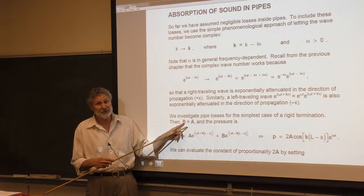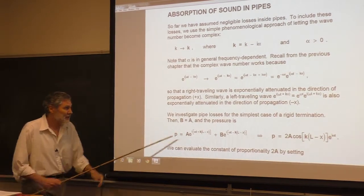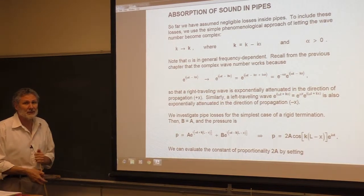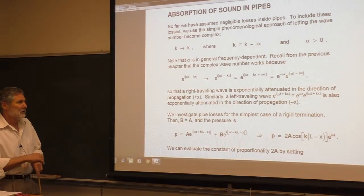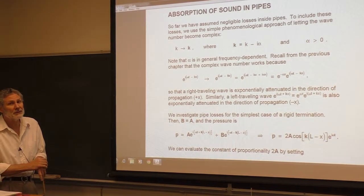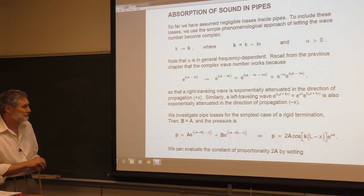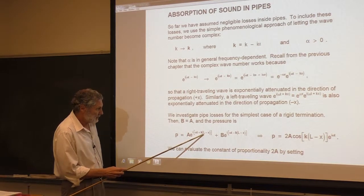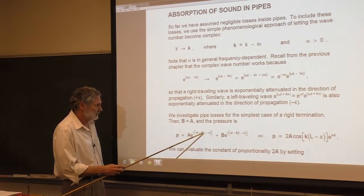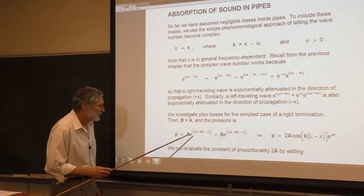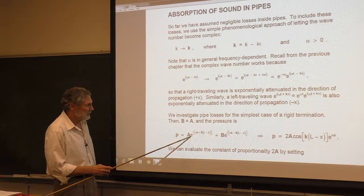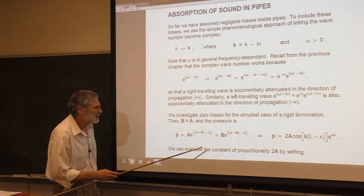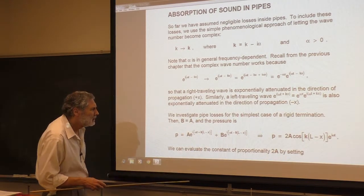The rigid termination means that the left traveling amplitude is equal to the right traveling amplitude. This has a simple form because we effectively move the origin to the terminating point. Here's the pressure — the right traveling wave and the left traveling wave — and K, which should be a bold K.